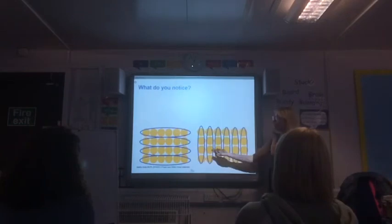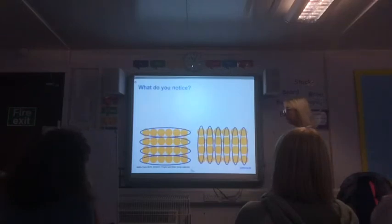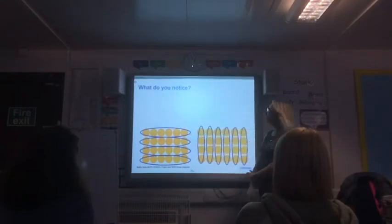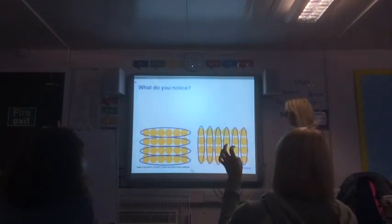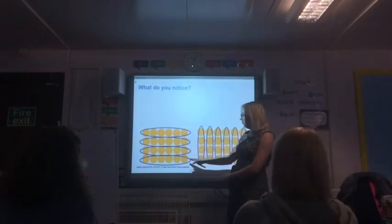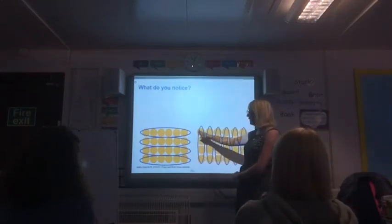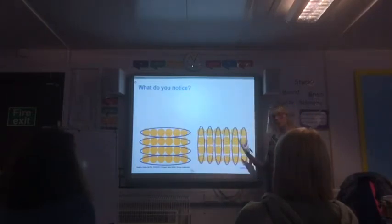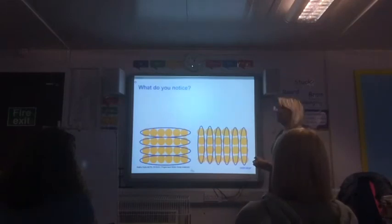What do you notice about these representations? What do you notice about the pictures on the board? These ones on the left are grouped horizontally and these are grouped vertically — good mathematical language. We've got horizontal groupings here and vertical groupings here. We've got four groups on that side and six groups on that side with different numbers in each. What do you notice about the total in each image? The total is equal. Absolutely — the total is equal.